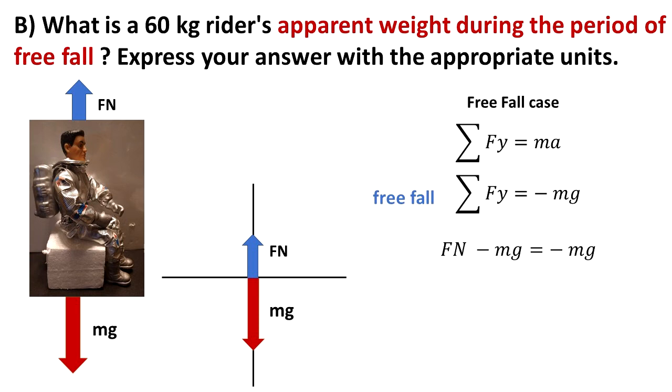Now let's say that we have normal force going up minus mg is equal to negative mg. When we add negative mg to the other side, we get that the normal force for this case of free fall is equal to negative mg plus mg, and that's equal to zero, it cancels out.